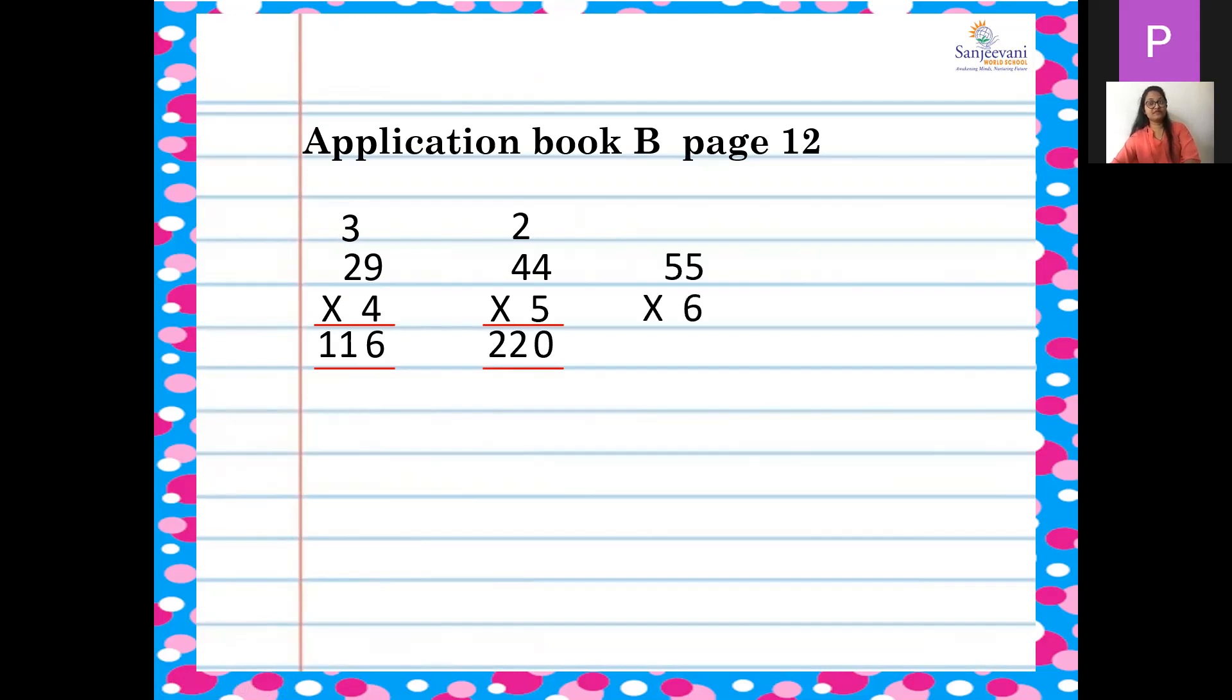Third lift, 55 into 6. 6 fives are 30. Then again, 6 fives are 30 plus 3, 33.